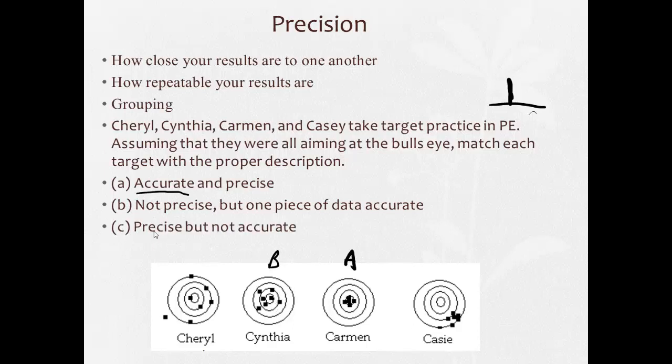Precise but not accurate. So grouped, clumped, but not near the bullseye. Well, Cassie here, they're clumped fairly well, but none of them are near the bullseye. So that would be Cassie.